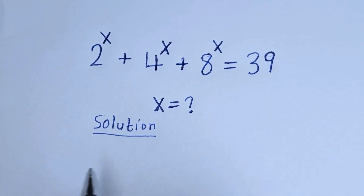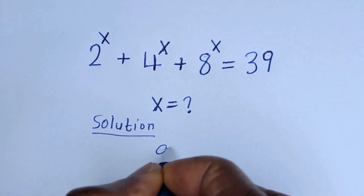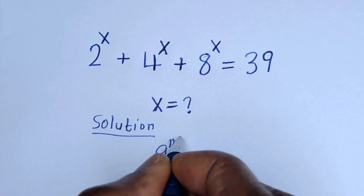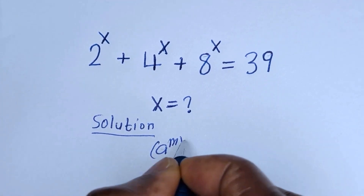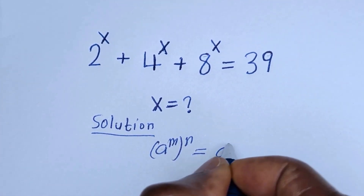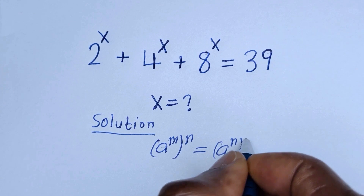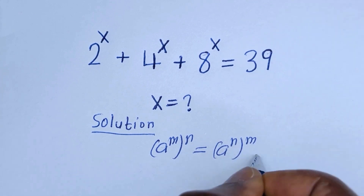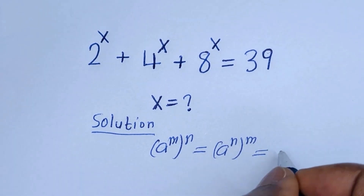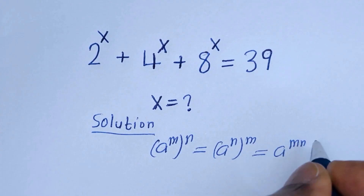Take note of this: if you have a raised to power m, to the power of n, this is equal to a raised to power n to the power of m, which is equal to a raised to power m times n.